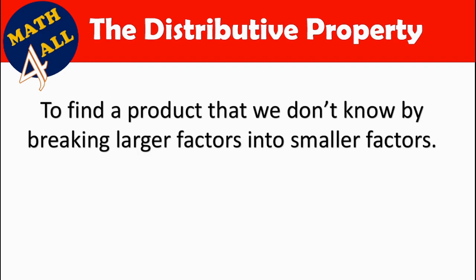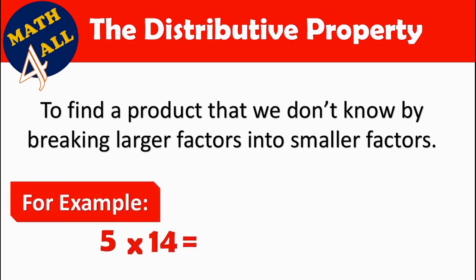The distributive property means finding the product we don't know by breaking larger factors into smaller factors. For example, if you have 5 by 14 — 14 is a large factor, so we have to break it. 5 by 14 will equal 5 by 10 plus 4.